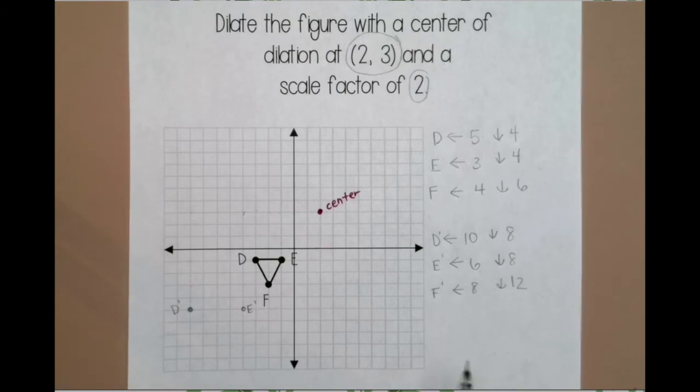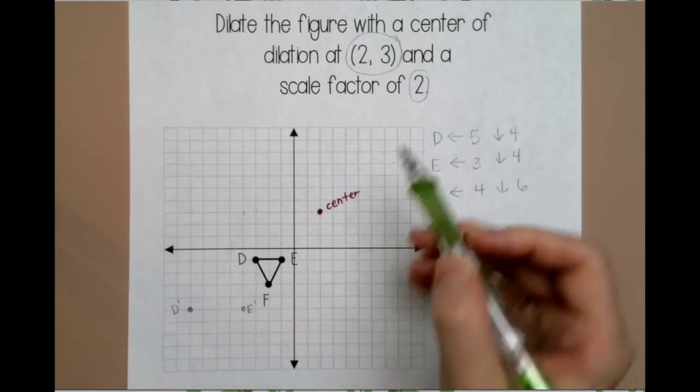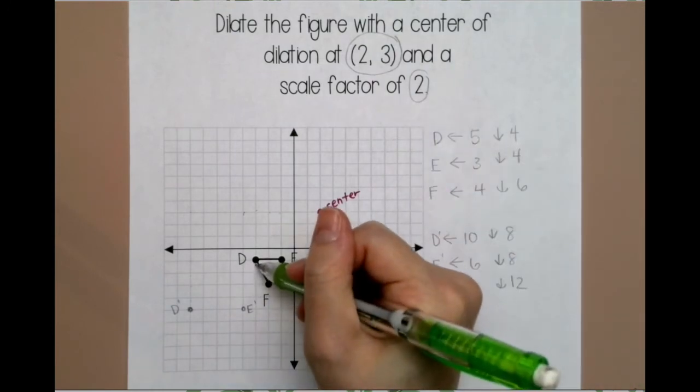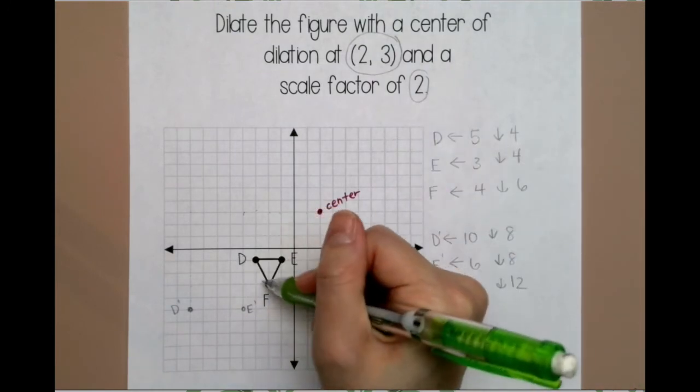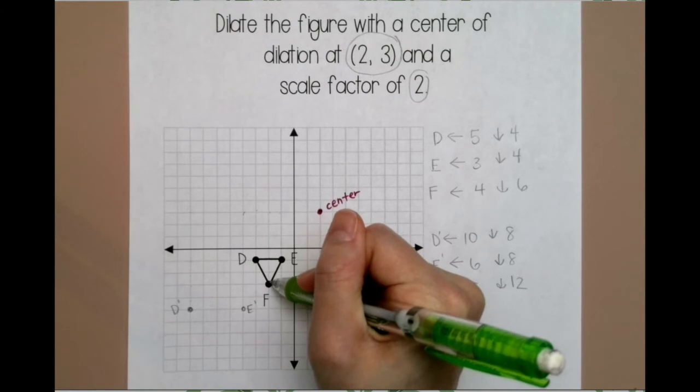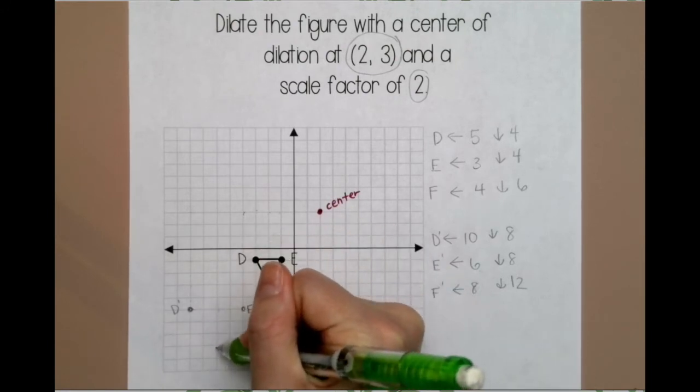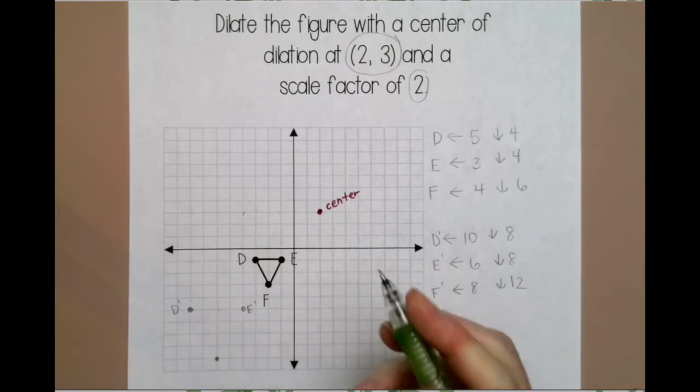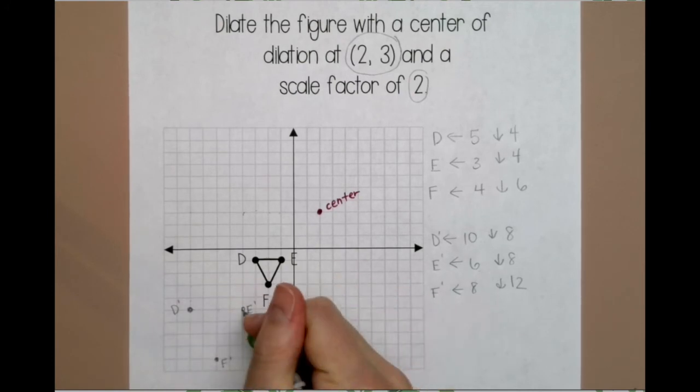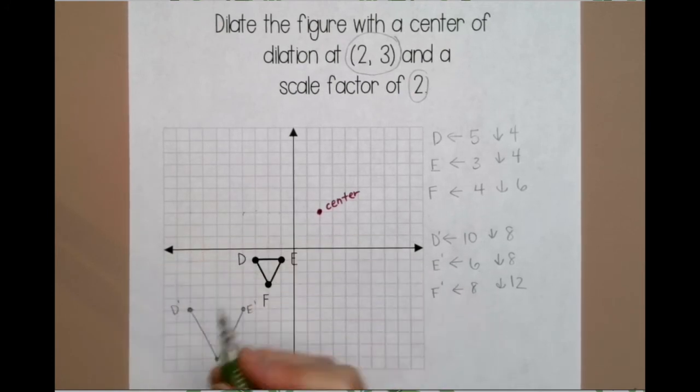Alright, another method that you can use is use your original figure, and you just want to double the distance. So, right here, from D to F, it was right 1, down 2, so I need to go right 2, and down 4. That might save you some time when you're finishing out your shape. And then just connect your points.